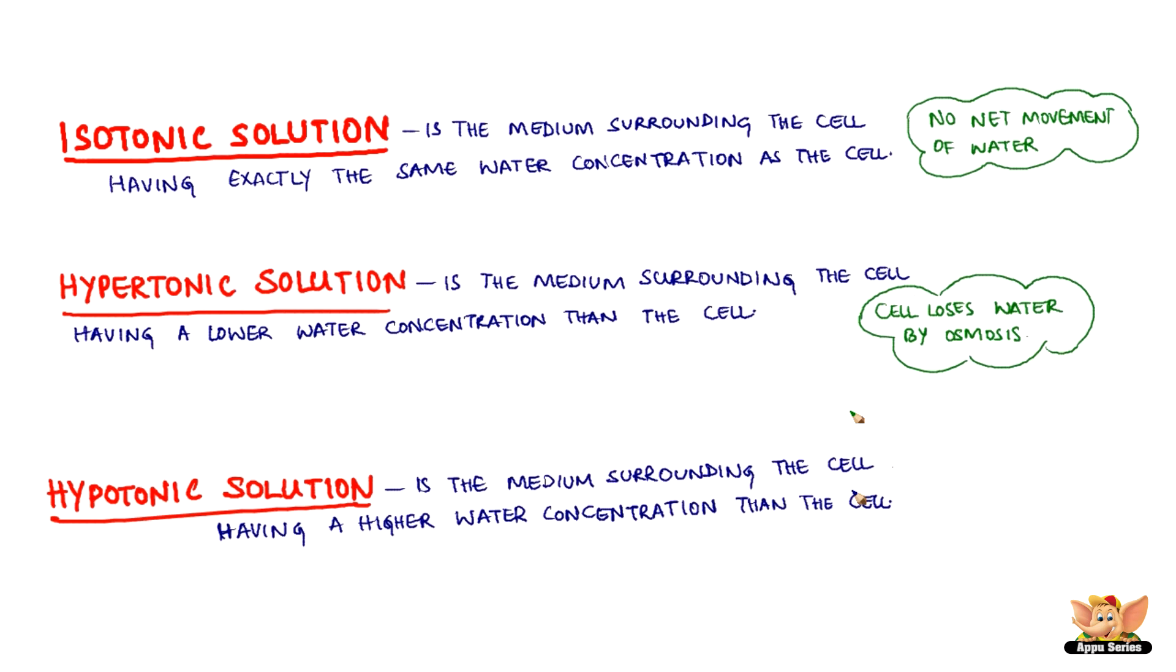Hypotonic solution is the medium surrounding the cell having a higher water concentration than the cell. In such a case the cell gains water by osmosis. The water moves from the outer medium into the cell.